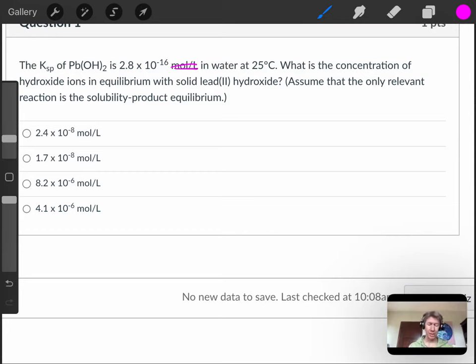In water at 25 degrees Celsius, what is the concentration of hydroxide in equilibrium with solid lead(II) hydroxide? Assume that the only relevant reaction is the solubility product equilibrium, and we'll set that aside for now.